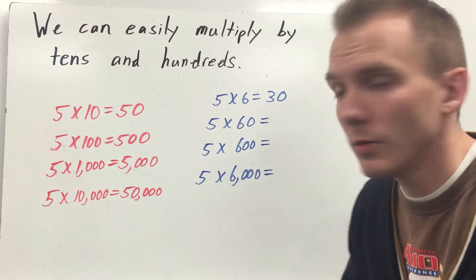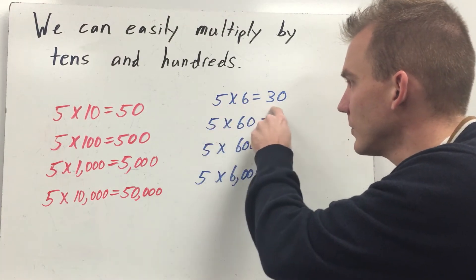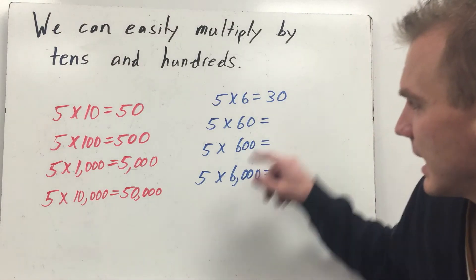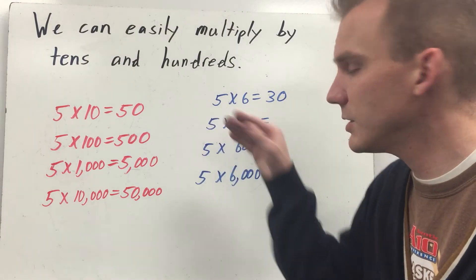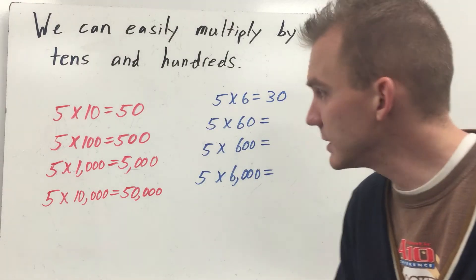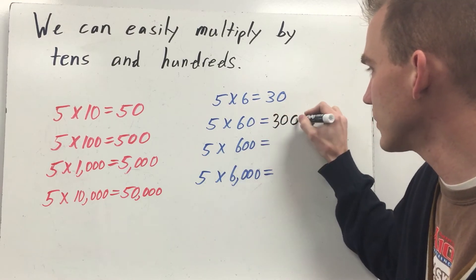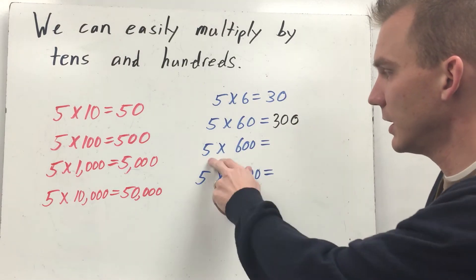Here's where you get a little bit tricky. When you have a problem that's five times six, there's no zeros. So I just do five times six and I get thirty. Don't get confused by that because then five times sixty, well, I have one zero. So after I do five times six, I'm going to add one zero. So five times six is thirty. But I have to add one zero. So my answer is actually three hundred.